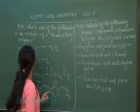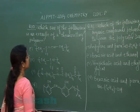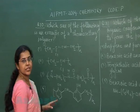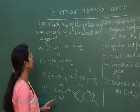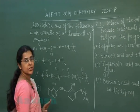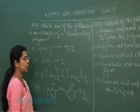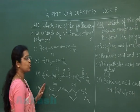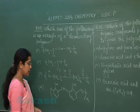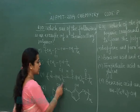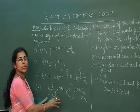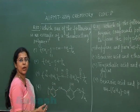Our next question is question number 80. Which one of the following is an example of thermosetting polymer? The first option is neoprene, second option is polyvinyl chloride, third option is nylon 66, and fourth option is bakelite.